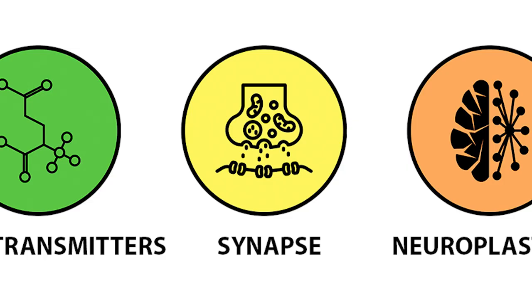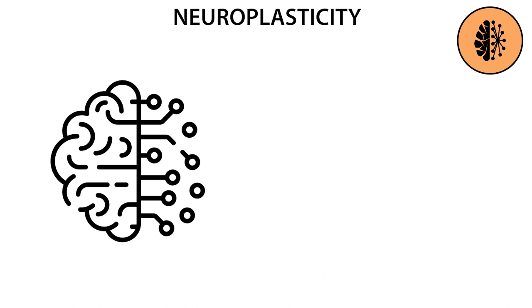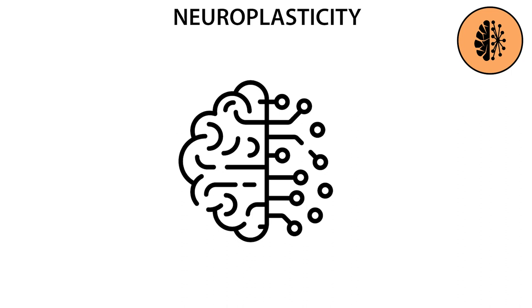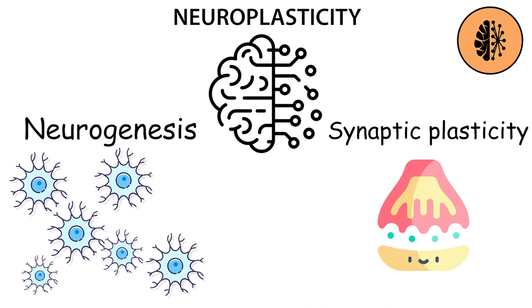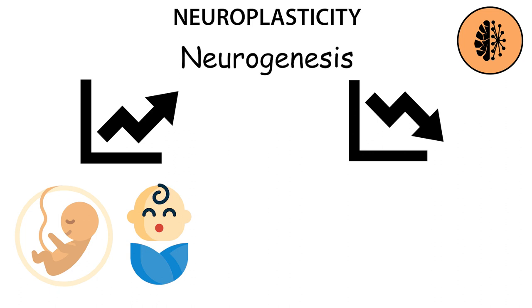Neuroplasticity is the ability of neural networks in the brain to change through growth and reorganization. Other terms for neuroplasticity are brain plasticity and neuronal plasticity. The two main areas of neuroplasticity are neurogenesis, generation of new neurons, and activity-dependent synaptic plasticity. The neurogenesis rate is high during embryonic development and early childhood, but declines sharply in late adolescence and adulthood.